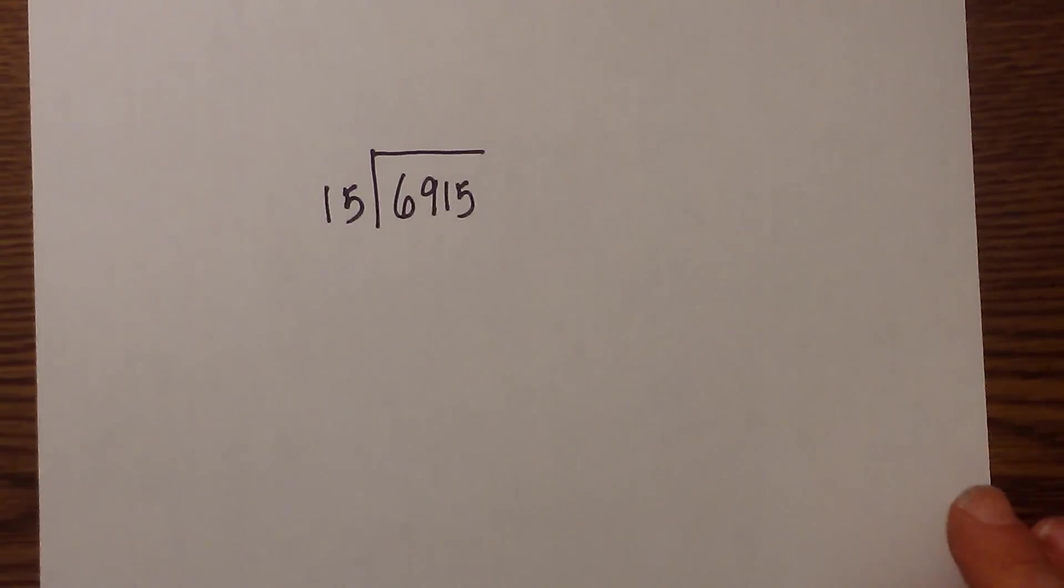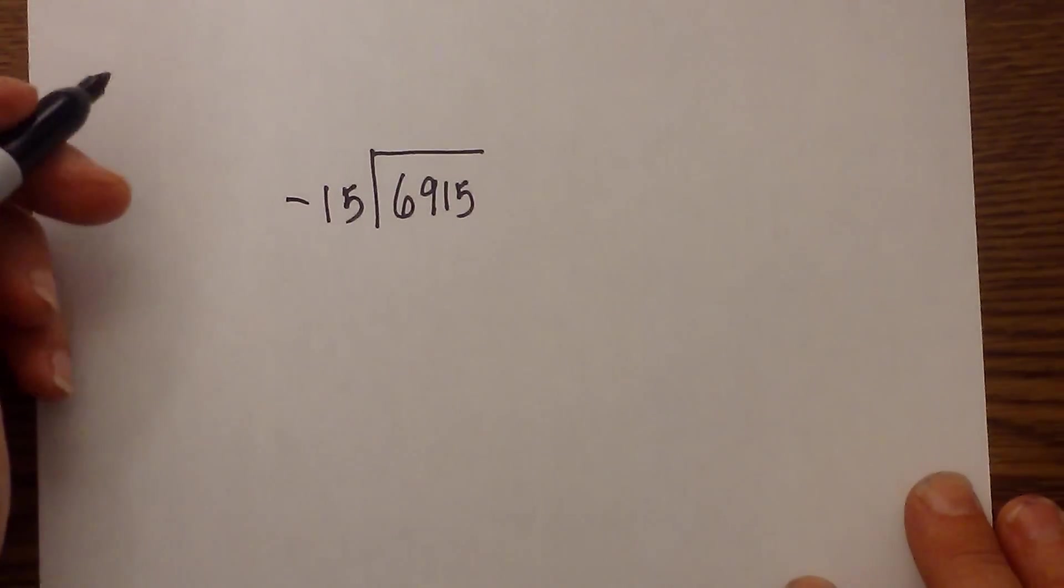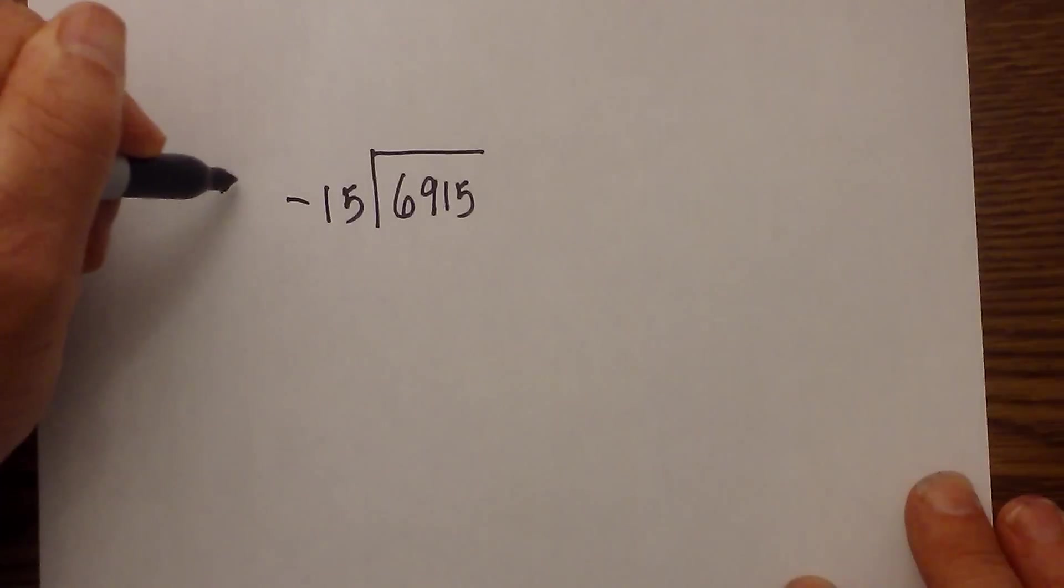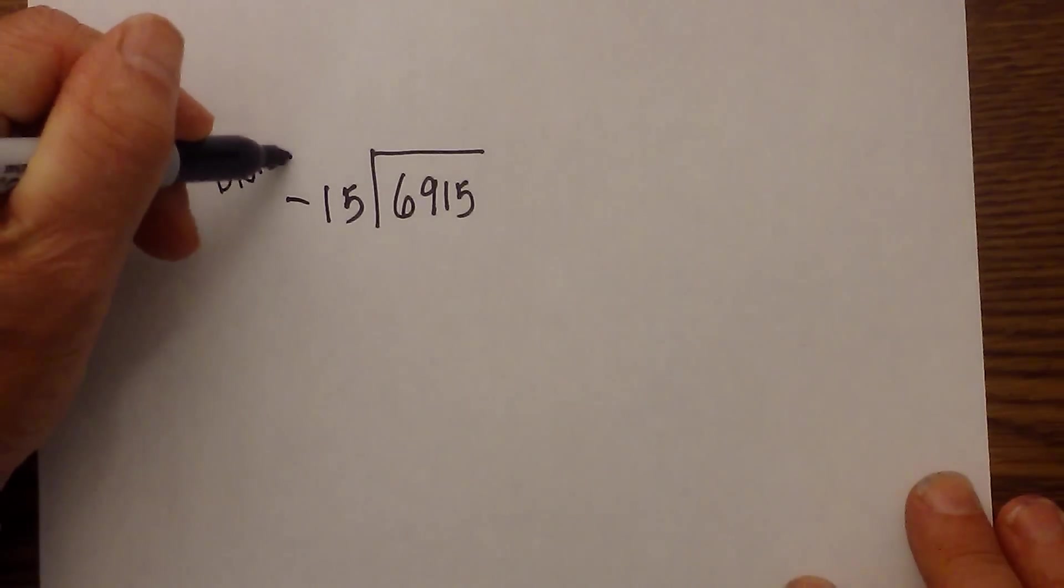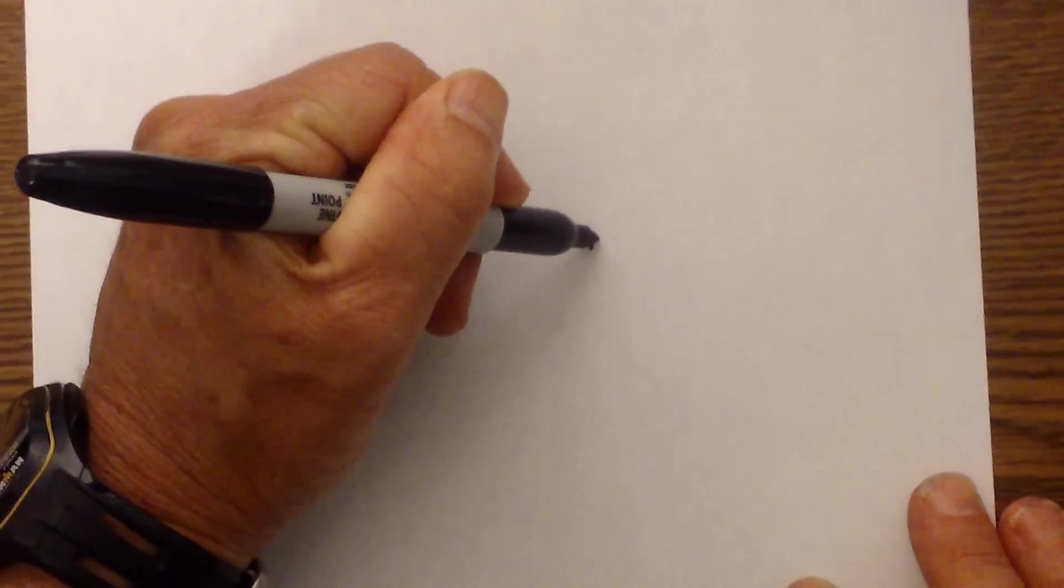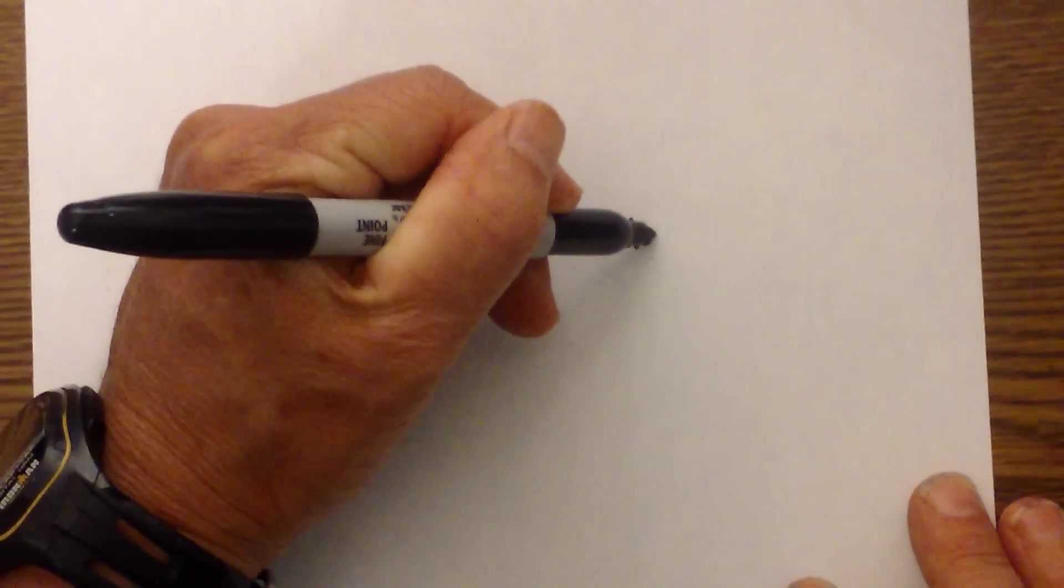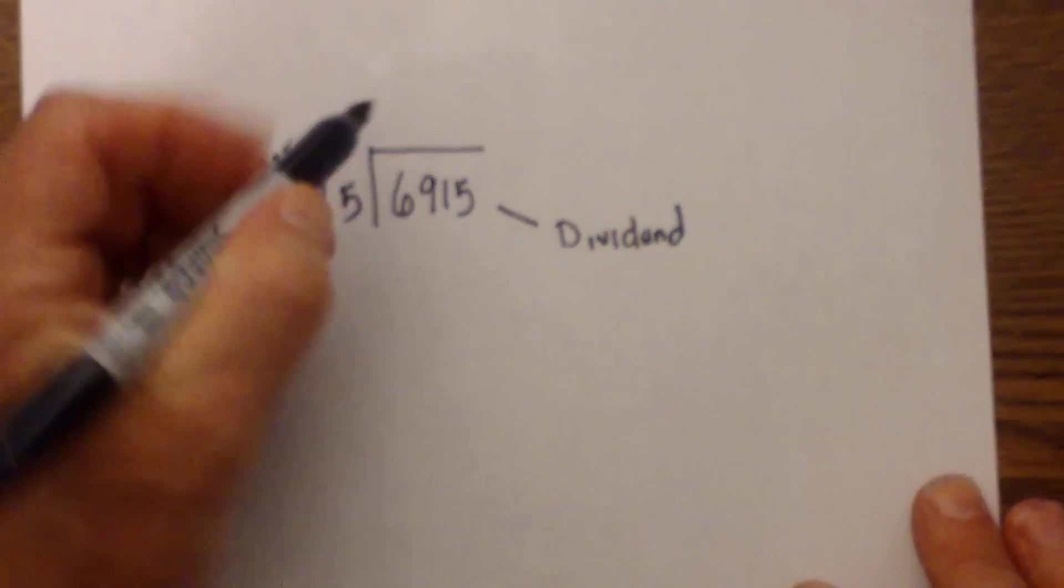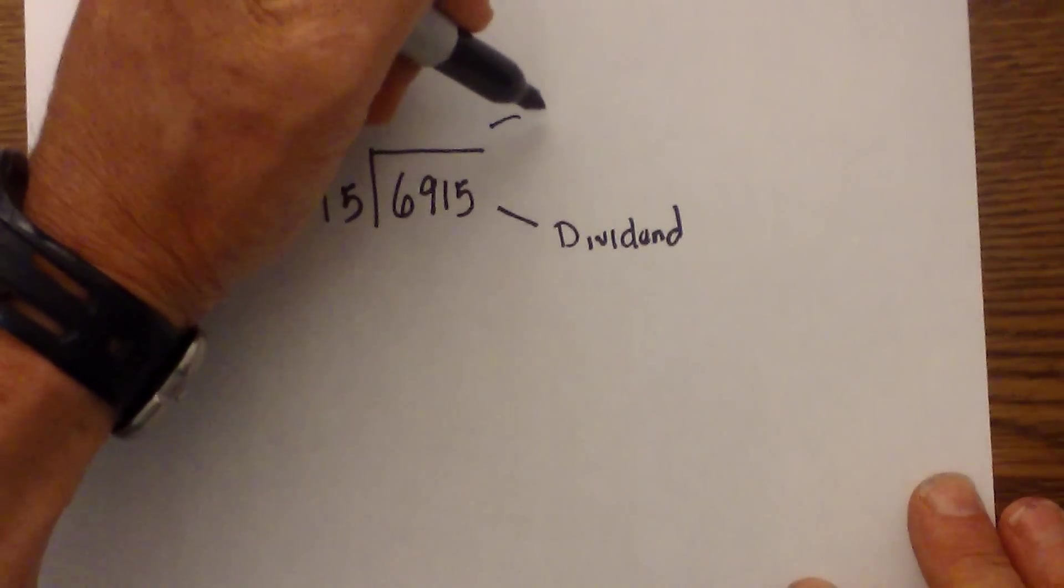Let's go ahead and work some examples of long division. Before we get started, let's label a couple of things. The 15 is called the divisor, this is the dividend, and then your answer is going to be your quotient.